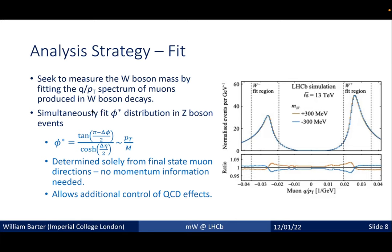We also simultaneously fit the phi-star distribution in Z boson events. Phi-star is determined solely from the final-state muon directions — defined in terms of delta-phi and delta-eta between the two muons — with no momentum information required. This allows us to somewhat decouple effects associated with our experimental knowledge of the momentum scale from control of QCD effects.